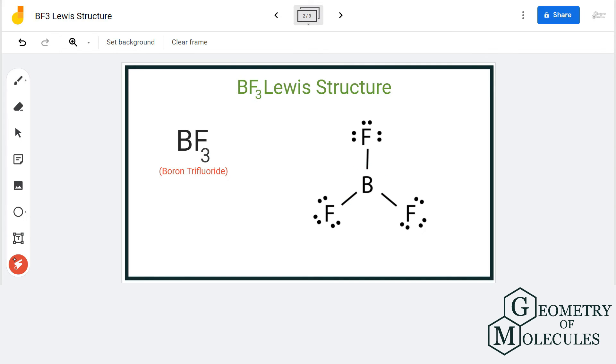To check if this structure is stable, you can also calculate the formal charges on boron and fluorine atoms. We have shared the formula in our previous video or you can check out the formula on our blog, which we are going to link below. If you check the formal charges, you will find that the charges on boron and fluorine atoms are zero, and hence this is the most stable Lewis structure for BF3.